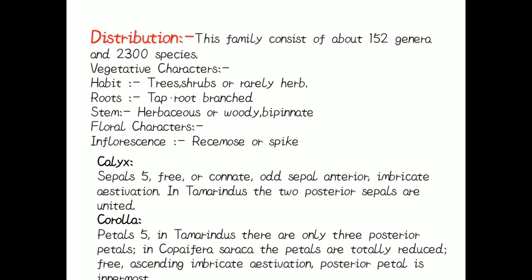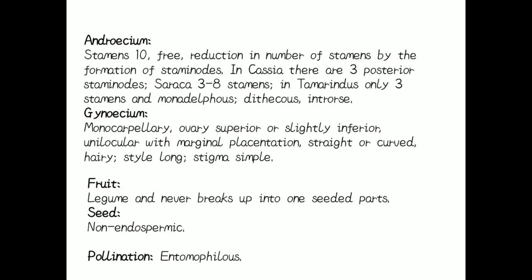Floral characters — Inflorescence: racemose or spike. Calyx: the accessory floral parts of the plant consist of generally 5 sepals, which are free or sometimes connate. Anterior imbricate aestivation; in Tamarindus the two posterior sepals are united. Corolla: there are five petals; in Tamarindus there are only three posterior petals; in Copyphera and Saraca the petals are totally reduced. Pre-ascending imbricate aestivation; the posterior petal is innermost.